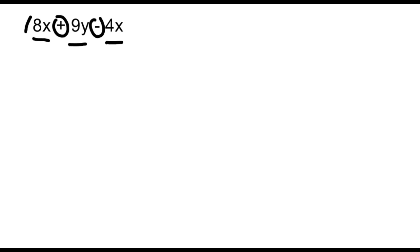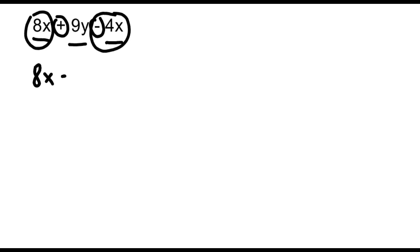We have to understand that 8x is a like term with 4x, but we have to include the sign in front of 4x in our calculation. What I mean by that is we take 8x and subtract from it 4x. The reason we subtract is because we had a subtraction sign in front of 4x. If you subtract 4 of something from 8 of the same thing, that would leave you with 4 of that object — in this case, 4x.